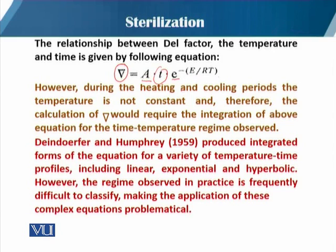The DEL factor equals A — the Arrhenius constant — multiplied by time T, with the term minus E over RT. This equation shows the relationship of the DEL factor with temperature and time. However, during the heating and cooling period, the temperature is not constant.